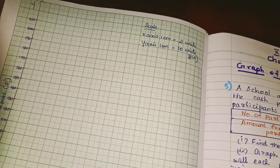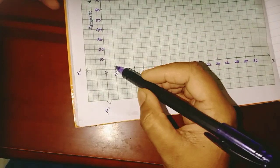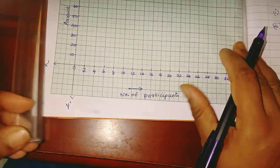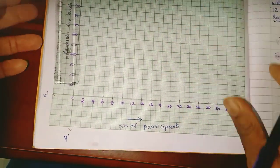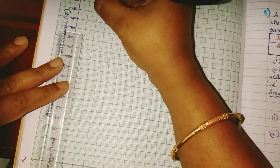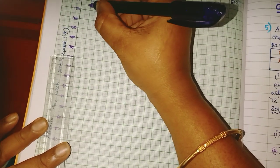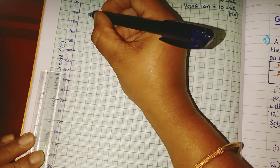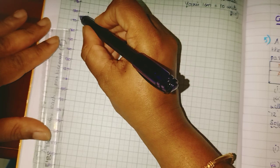For the graph, if we take 10 to 10 units on the scale, values go up to 210. Now we will plot. First point: (2, 180) — 2 on the x-axis, 180 on the y-axis. Mark the point at 2, 180.